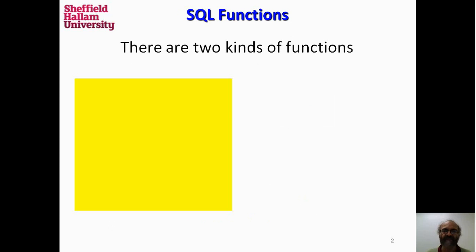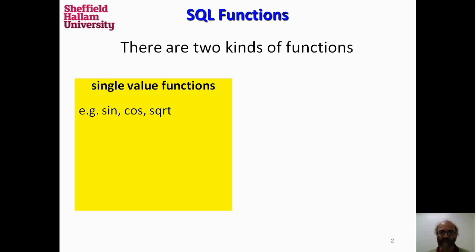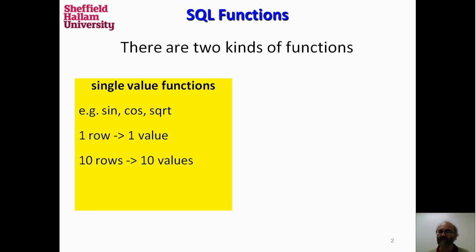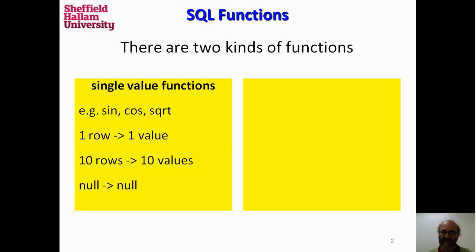Now that you've seen these functions, you can see there actually are two different kinds of functions in SQL. Functions that give you just one value — things like sine, cosine, square root, all of those kinds of calculations. If there's one row, that returns one value, but it returns one value for each row. So if we have ten rows, we get ten values. And when we use it with null, the result is null.